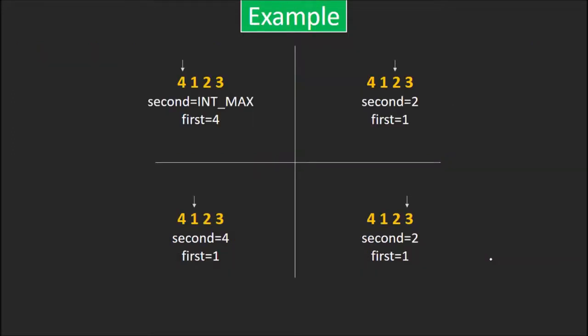Let's see an example for this algorithm. Our initial array is 4 1 2 3. Initially, both first and second are infinite. We'll start traversing the array now. First element is 4 which is smaller than first. So, second becomes equal to first which was already infinite and first becomes 4.